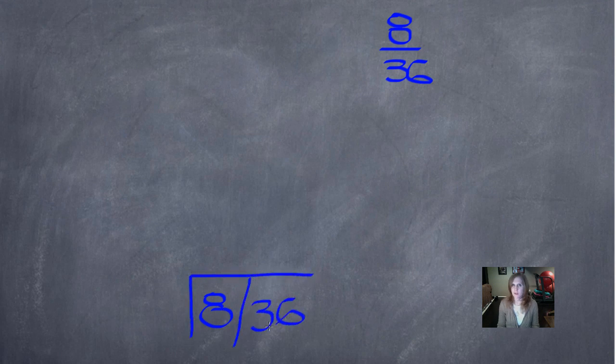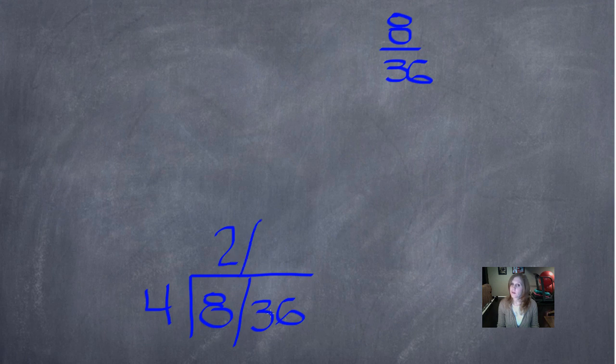We'll write it horizontally, just like we do when we enter it in the clickers. What goes into both 8 and 36? Let's try 4, just for fun. We'll try something different. 4 goes into 8, 2 times. 4 goes into 36, 9 times.